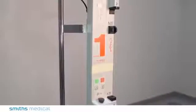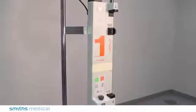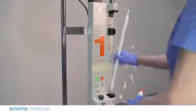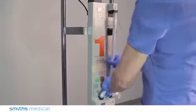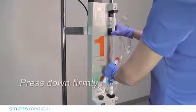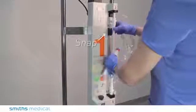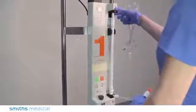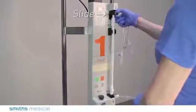To install the Level 1 IV Administration Set onto a Level 1 Fluid Warmer, start by inserting the bottom end of the heat exchanger into the number 1 block. Press down firmly to properly seat the heat exchanger. Snap the heat exchanger into the guide. Slide the number 2 block down firmly to secure.